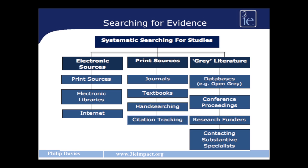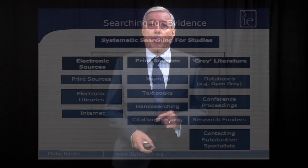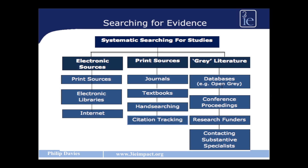And then there's the general internet, but here we must be very careful because we know that not everything we find with Google on the internet is what we want to be using for scientific purposes. The centre column shows print sources, meaning we look at journals and textbooks, often in considerable detail, going through the table of contents or the index to try and find studies we might not have found when looking at the electronic sources.